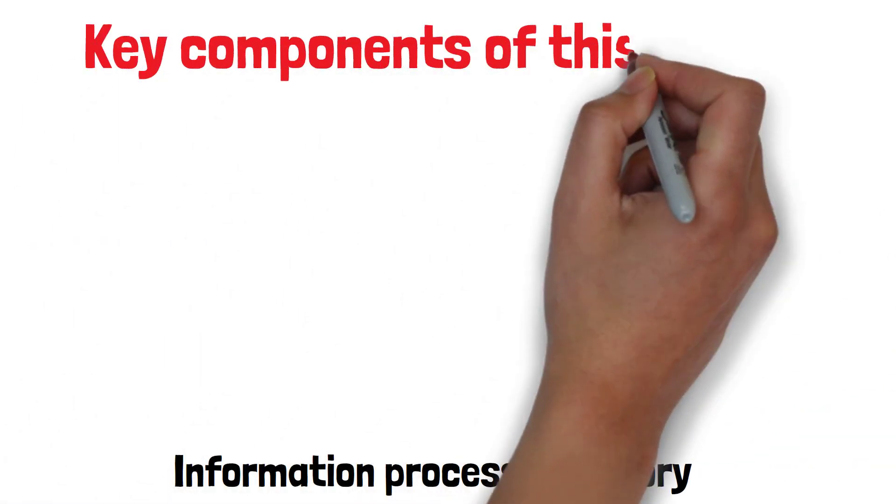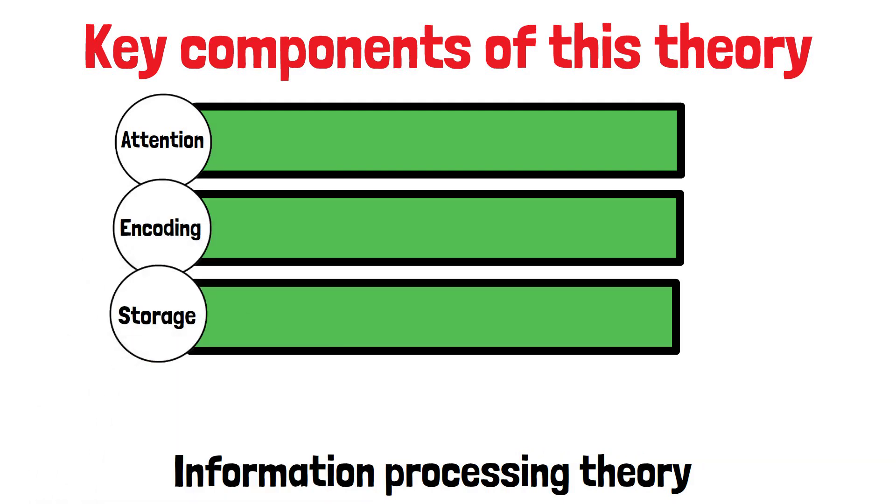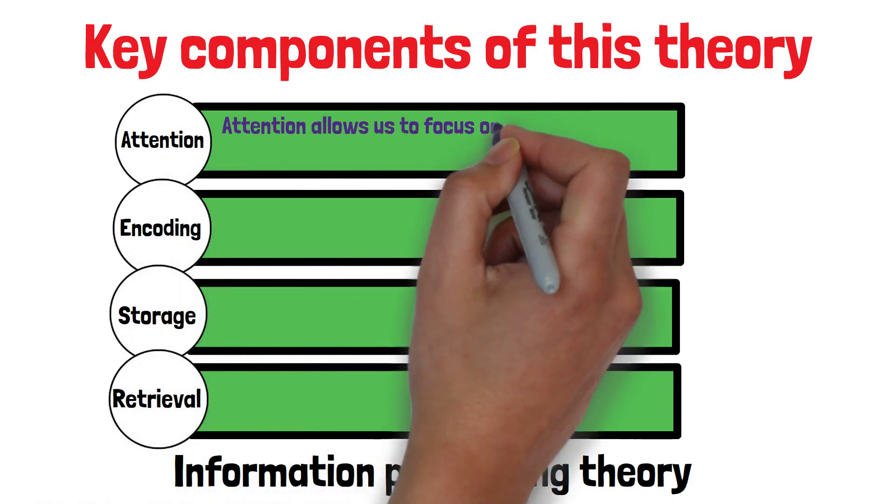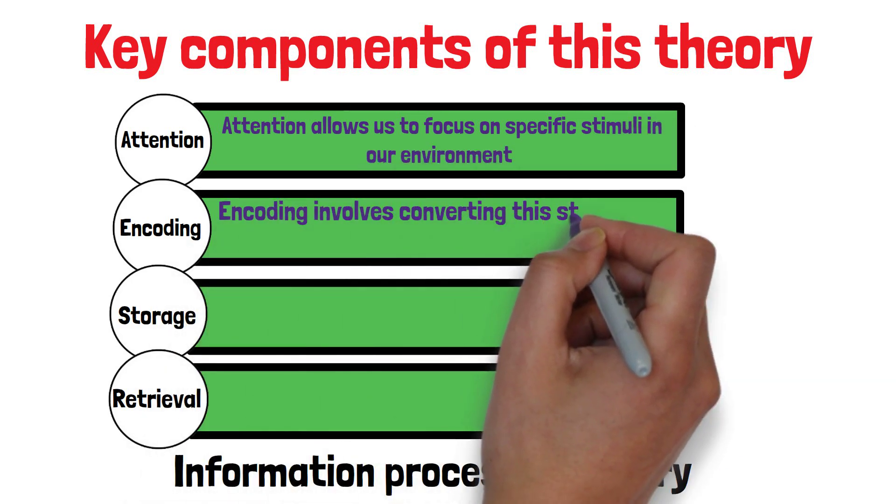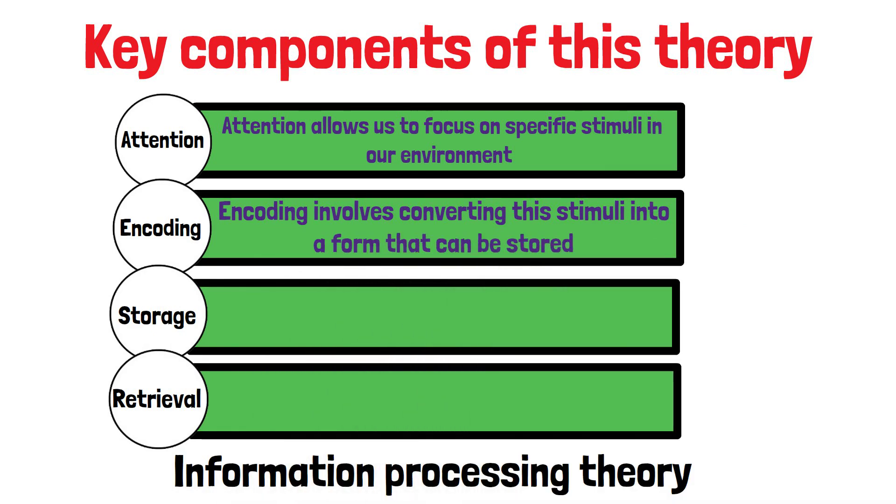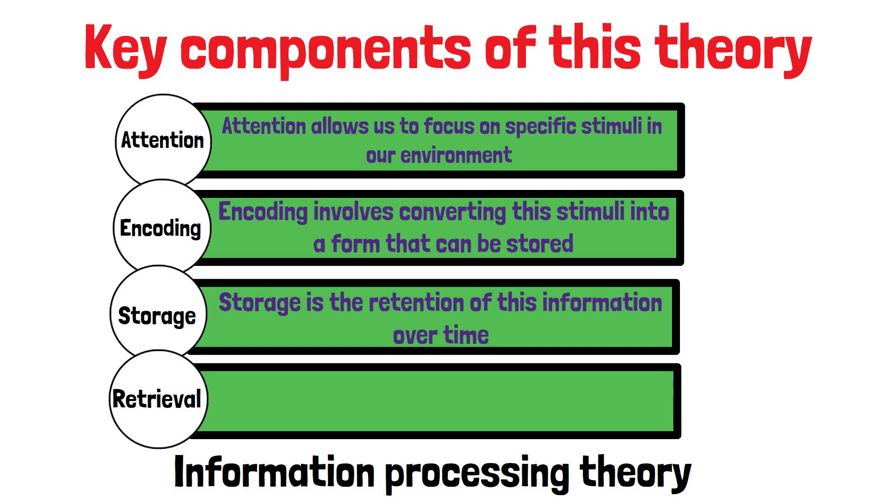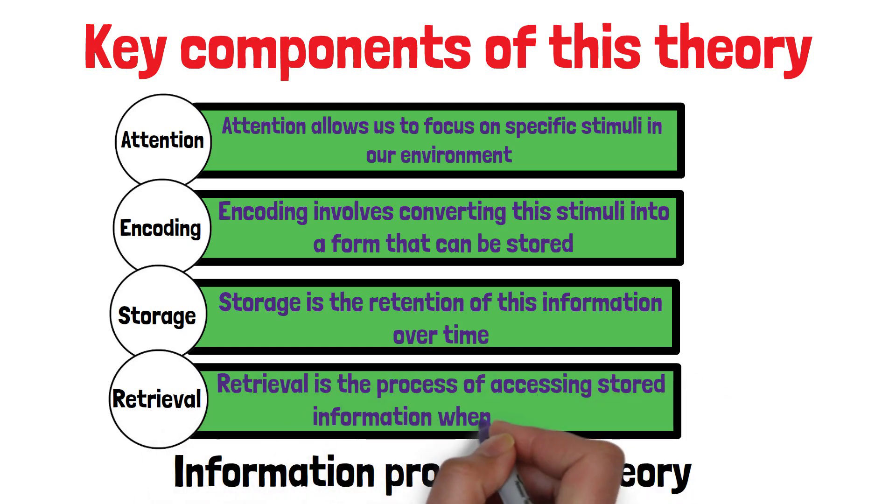Key components of this theory include attention, encoding, storage, and retrieval. Attention allows us to focus on specific stimuli in our environment. Encoding involves converting this stimuli into a form that can be stored. Storage is the retention of this information over time, and retrieval is the process of accessing stored information when needed.